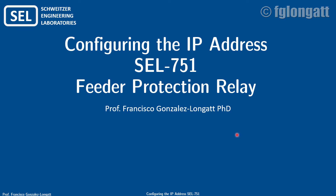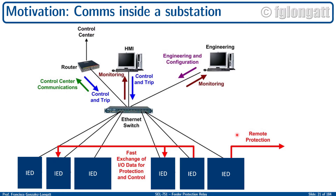Coming back to my video — today we are configuring the IP address of the SEL-751 feeder protection relay. If you look at this slide, I have the communication layer inside a classical modern substation. I'm not talking about a digital substation using IEC 61850. I'm talking about a very basic substation where you have at the bottom several IEDs — one of them can be the Schweitzer relay we are discussing — and those devices are connected to an Ethernet switch using a classical Ethernet cable.